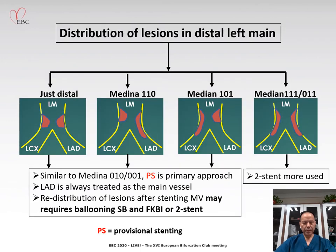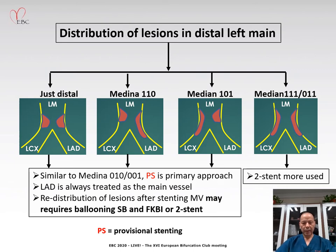Similar to all kinds of complex coronary bifurcation lesions, provisional stenting technique is the primary approach in treating Medina 101 bifurcation lesions. The LCX is always treated as the main vessel. However, after stenting the main vessel, redistribution of lesions may require balloon in side branch, kissing balloon inflation, or even a two-stent technique.